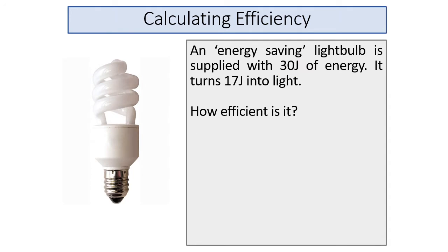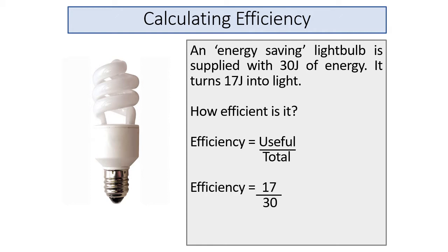Now pause the video and use the equation to calculate the efficiency of this energy-saving light bulb. The useful energy is 17 joules, the total energy is 30 joules, and multiplying by 100 gives an efficiency of 57%.